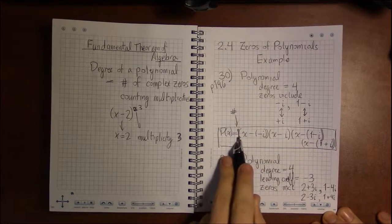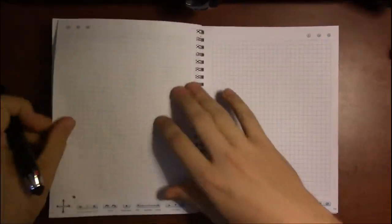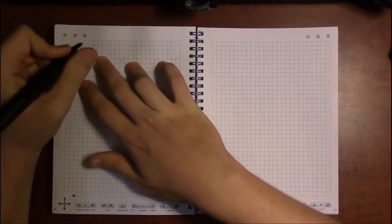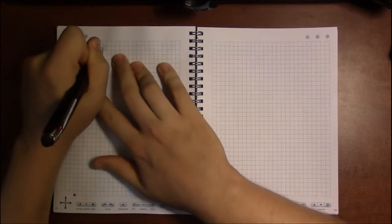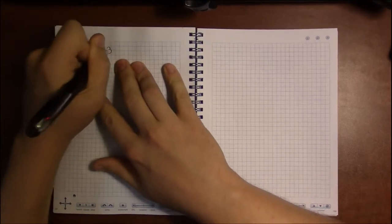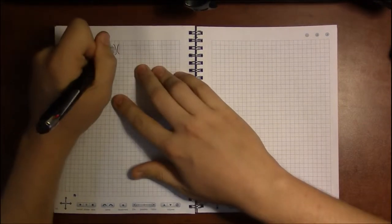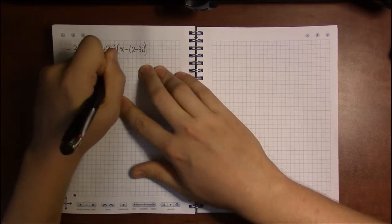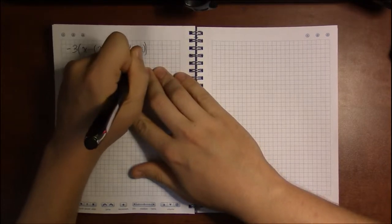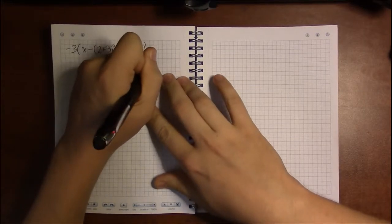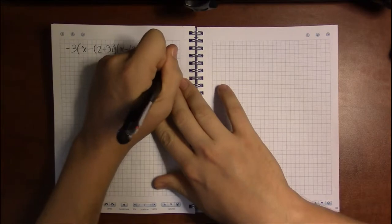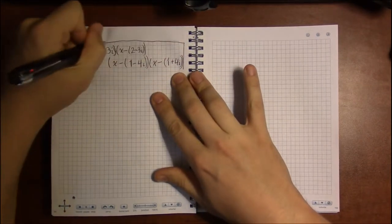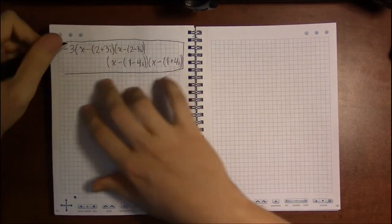Our p of x is going to be minus three, the leading coefficient, then x minus parentheses two plus three i, then x minus parentheses two minus three i, then times x minus parentheses one minus four i, times x minus parentheses one plus four i. That is our polynomial.